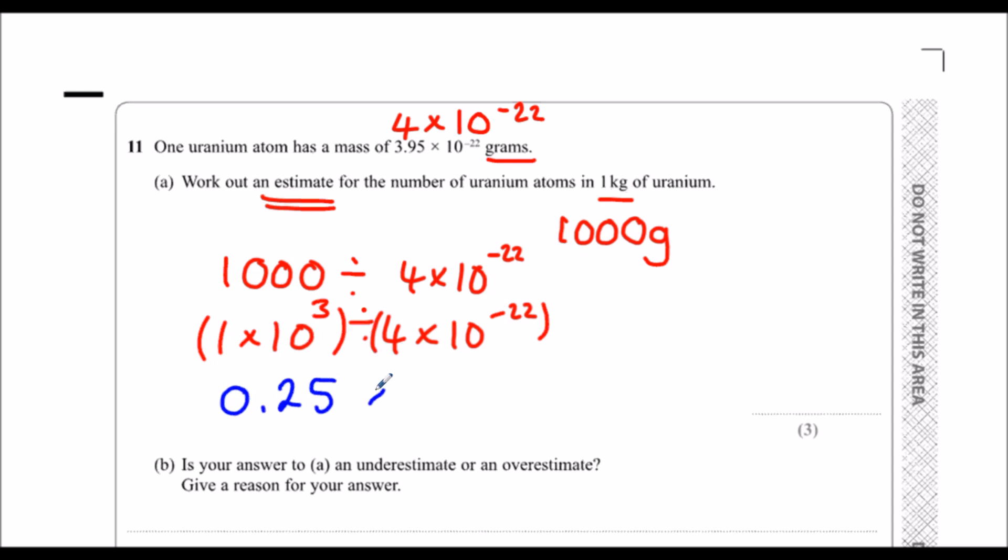And 10 to the power of 3 divided by 10 to the power of minus 22. Whenever we divide indices, we subtract the powers. So 3 minus minus 22 means 3 plus 22, which is 25.